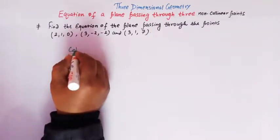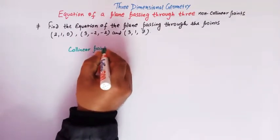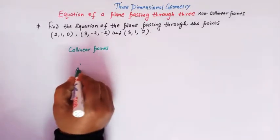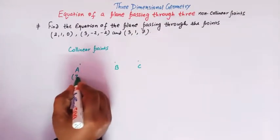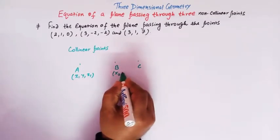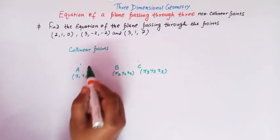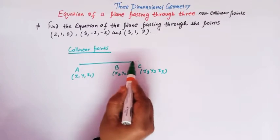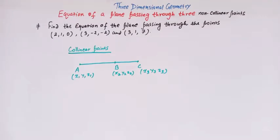Now we know that three points are said to be collinear if they lie on the same straight line. Suppose we have points A, B, and C, and the coordinates of these three points are (x1, y1, z1), (x2, y2, z2), and (x3, y3, z3). Let us take these three points A, B, C as collinear — lying on the same straight line.